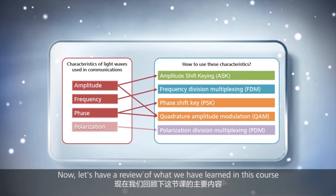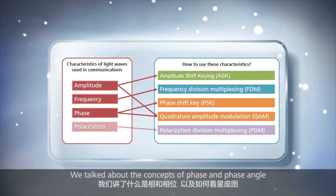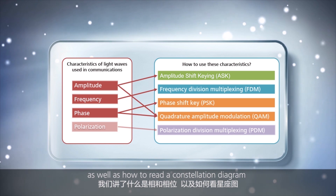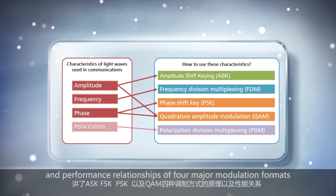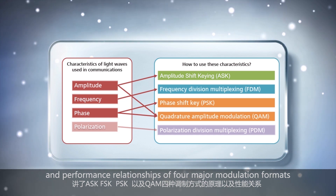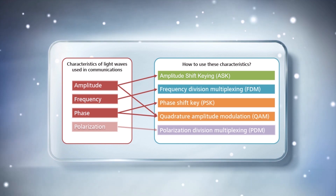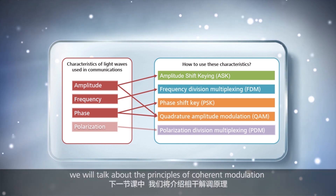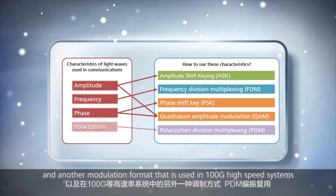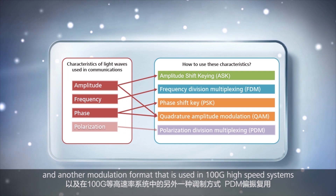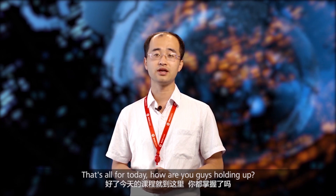Now let's have a review of what we have learned in this course. We talked about the concepts of phase and phase angle, as well as how to read a constellation diagram. We also learned about the principles and performance relationships of four major modulation formats: ASK, FSK, PSK, and QAM. In the next course, we will talk about the principles of coherent modulation and another modulation format used in 100G high-speed systems — polarization division multiplexing. That's all for today. How are you guys holding up?